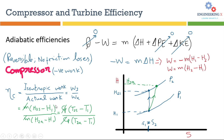Using these expressions and the work equation, we can finally write the expression for adiabatic efficiency of a compressor. Since enthalpy equals heat capacity times temperature, we can rewrite the efficiency in terms of temperatures. This allows us to find compressor efficiency as well as calculate power and outlet temperature.